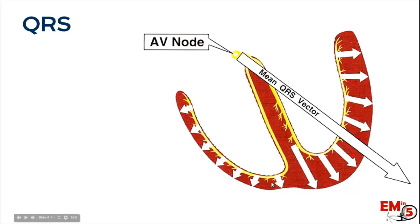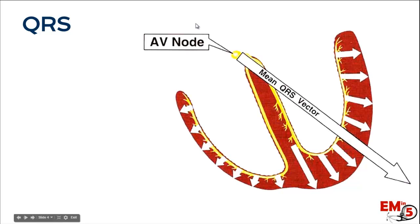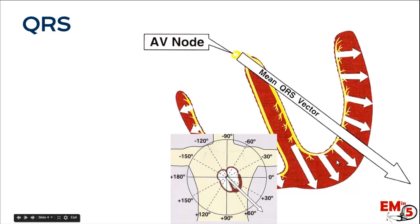You can imagine all these little vectors — shown as white arrows — depolarizing. Because the left ventricle is so much bigger, the average of these vectors ends up kind of downward and to the left. So a normal QRS axis is going to be somewhere between 90 and negative 30.